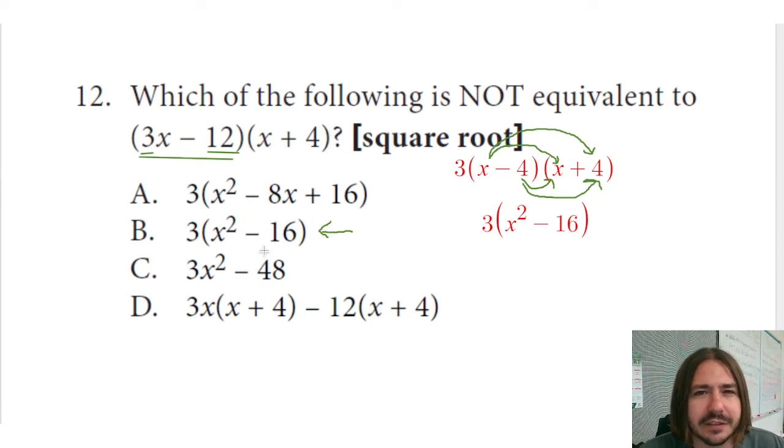And that kind of gives us our answer, because A is exactly the same as B, except it's got this minus 8x here, which is incorrect. We had negative 4x plus 4x should be zero. So since this one is not the same, we can go ahead and say with certainty that A is going to be our answer.